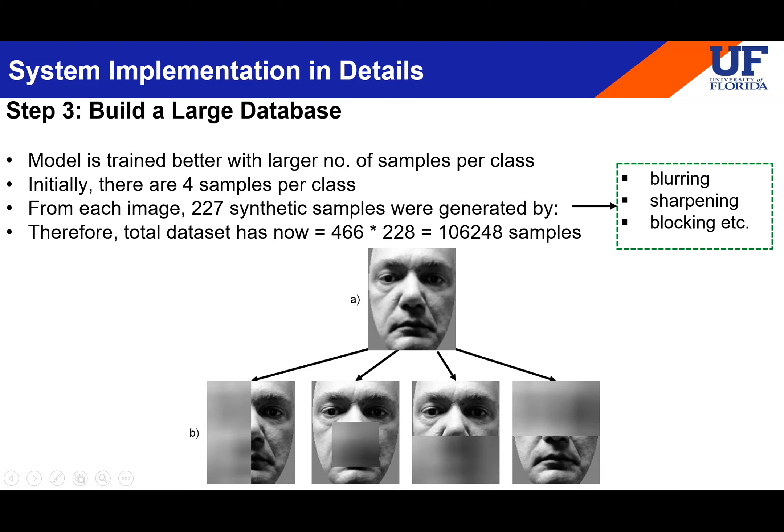For 466 classes, I came up with 106,248 total samples. I created the synthetic samples manually in Python using blurring, sharpening, and darkening — rather than using Keras image augmentation. For example, from one raw face image, I would blur the left region, or the lips, eyes, or nose area, and apply sharpening or other effects. In total there were 228 synthetic images per person, and that's how I built the large dataset.